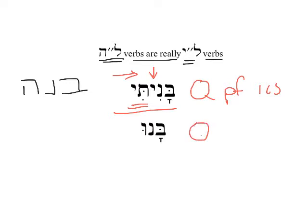However, with a kal perfect 3cp, this suffix begins with a vowel. In that case, it just displaces the he. In either case, whenever there's competition for the ending of a lamed-he verb, the he is going to get pushed out of the way because it's one of the Jonah letters.